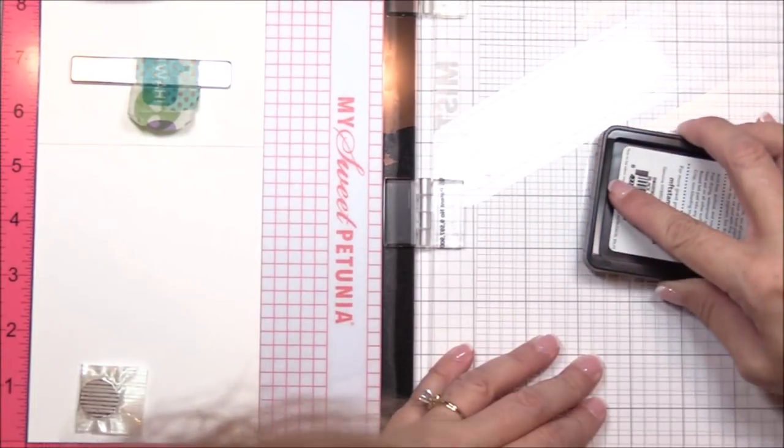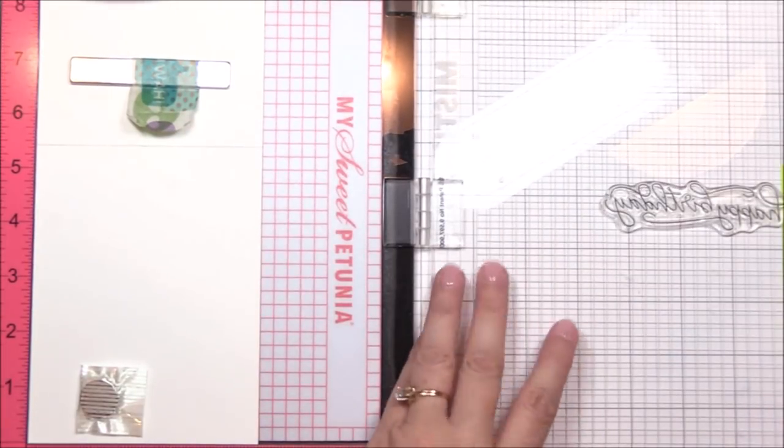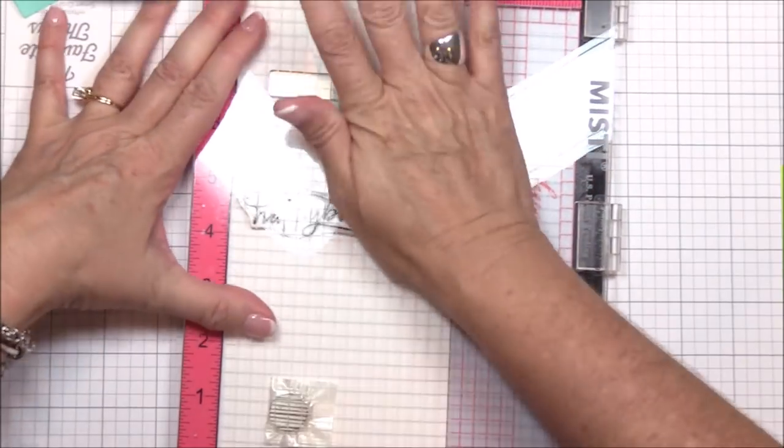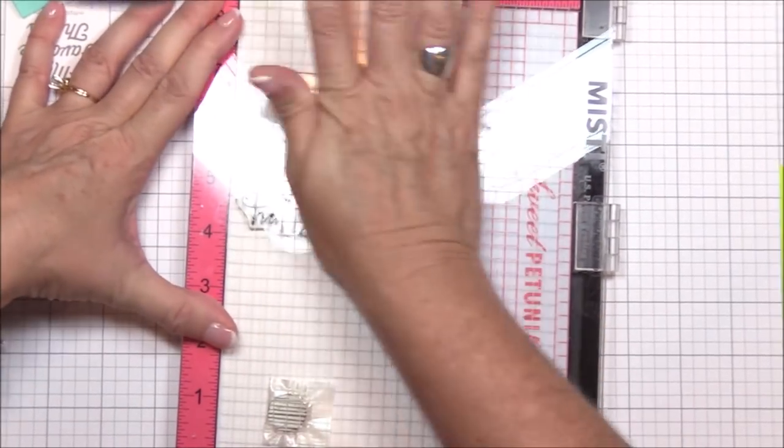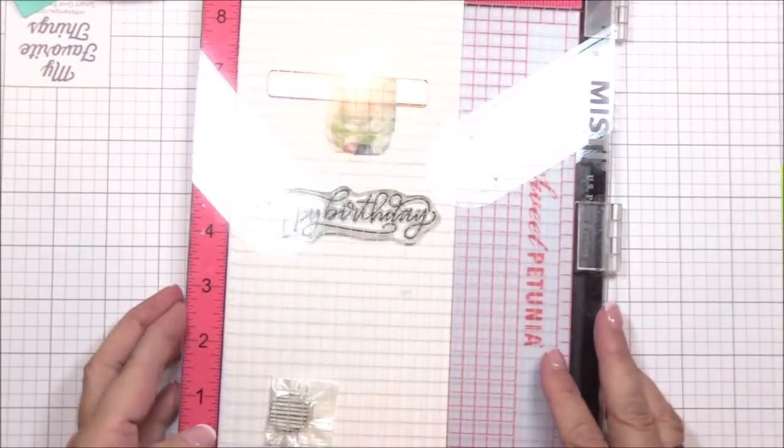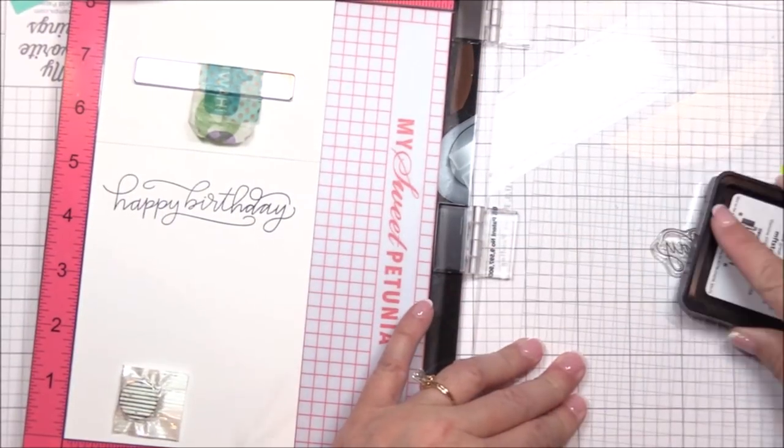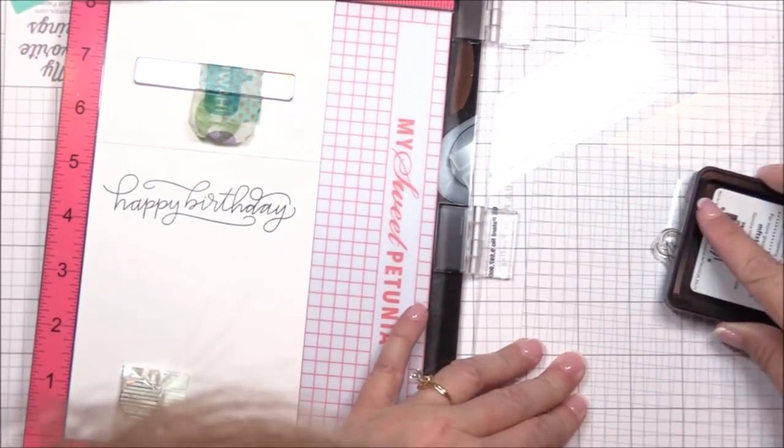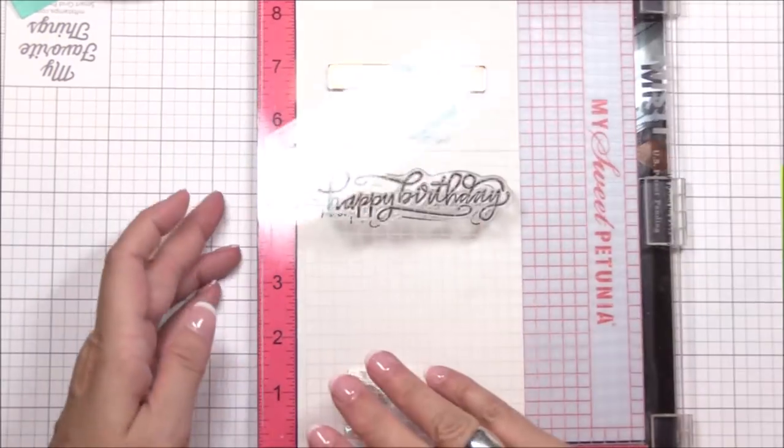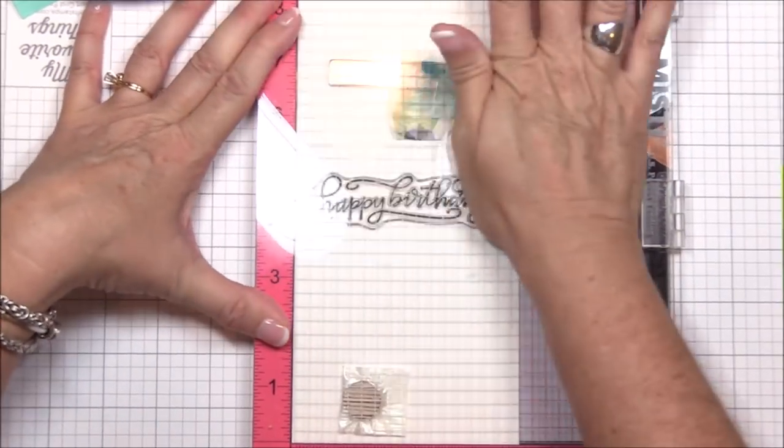Next I'm stamping the happy birthday sentiment also from the handwritten happiness stamp set onto the inside of an A2 top folding smooth white card base. Again I do this twice to get a darker impression. And with my Misti this repetitive stamping is a breeze. I can't imagine my crafty life without my Misti.